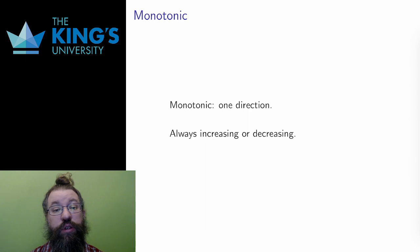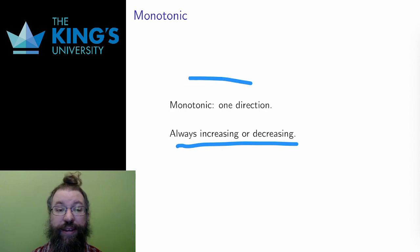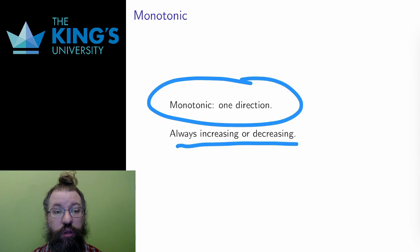Sometimes it is nice to refer to functions that are either always increasing or always decreasing, even without specifically knowing which. These functions are called monotonic. They have a single direction, always going up or always going down. Most functions are not monotonic because they change direction, sometimes going up and other times going down.